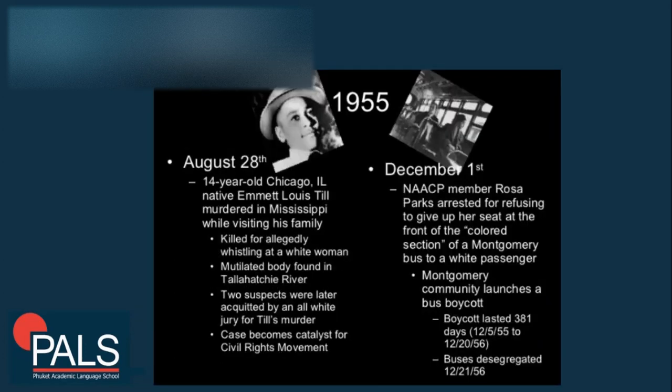In 1955, two situations happened. On August 28th, 14-year-old Emmett Louis Till, a Chicago, Illinois native, was murdered in Mississippi while visiting his family. He was killed for allegedly whistling at a white woman. His body was found mutilated. The worst thing was that the two suspects were later acquitted by an all-white jury for Till's murder.